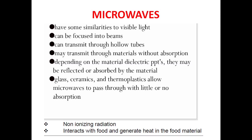Glass, ceramics, and thermoplastics are three kinds of material which allow microwaves to pass through with little or no absorption. Although ceramics and thermoplastics are not transparent to visible light, they are transparent to microwaves. That is why utensils made of ceramics and thermoplastics can be used in microwave ovens and the food inside can still be heated.